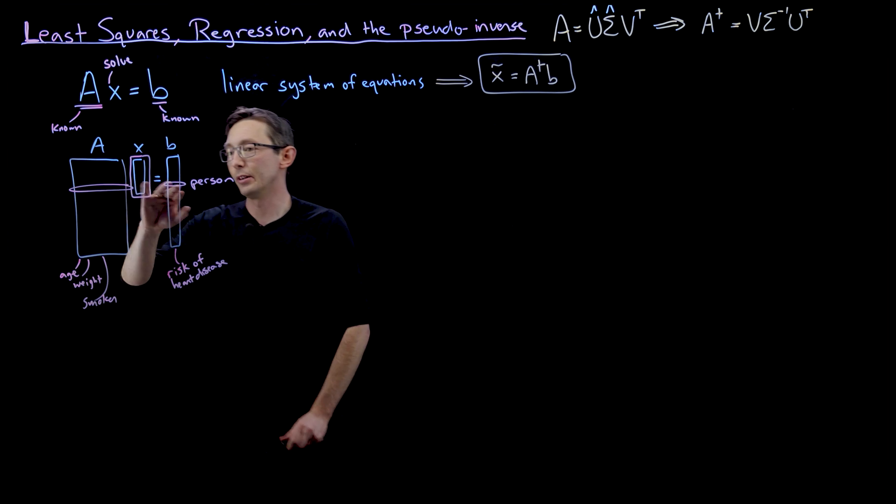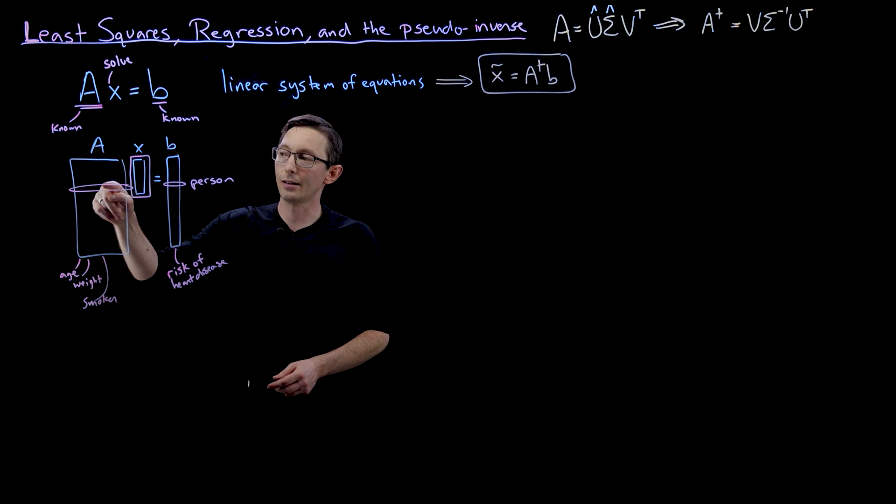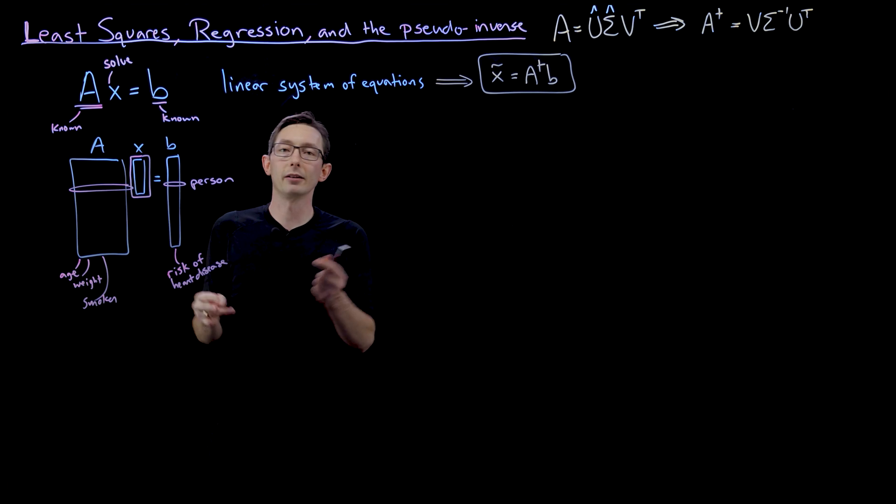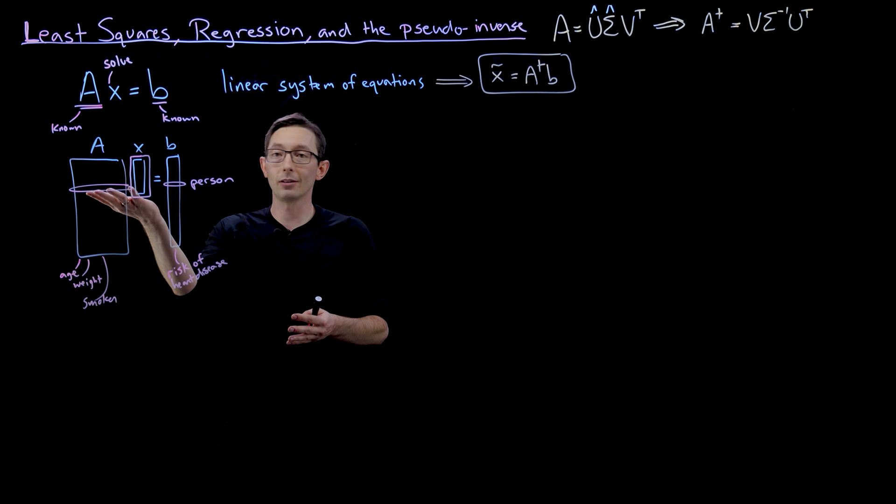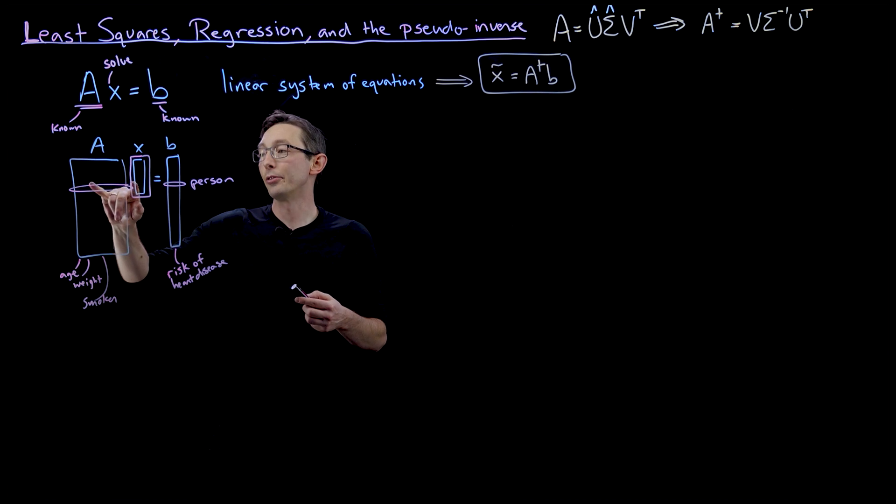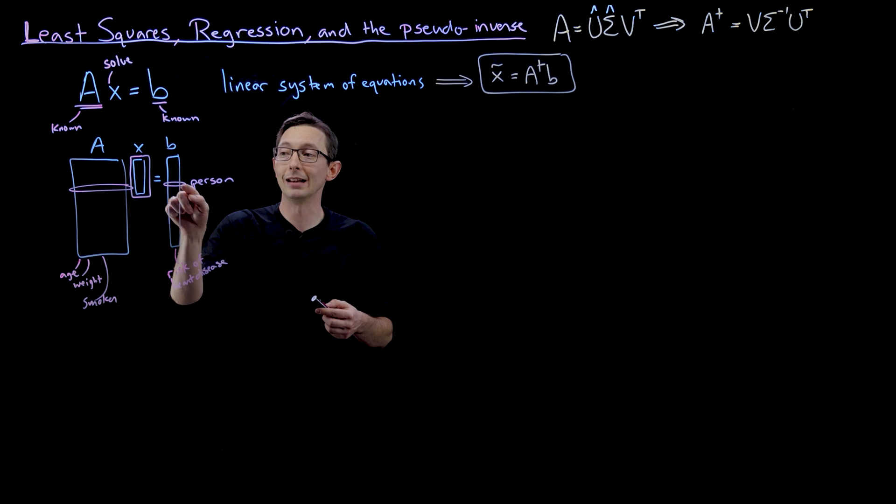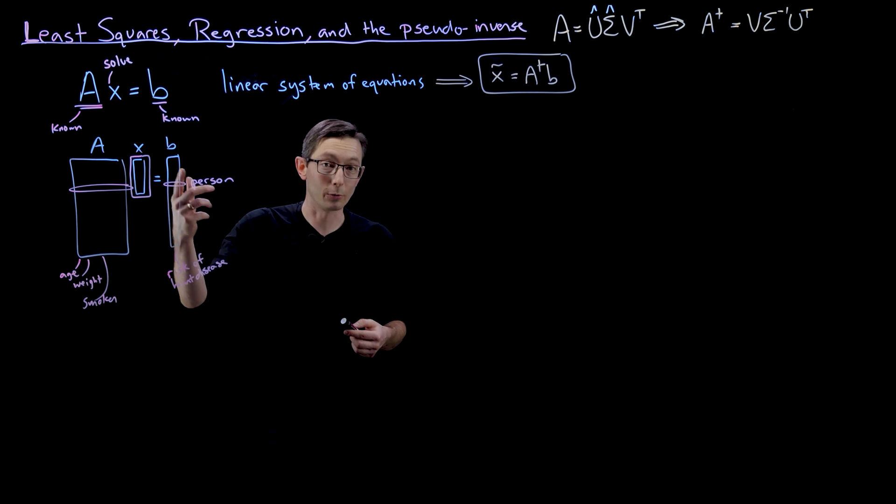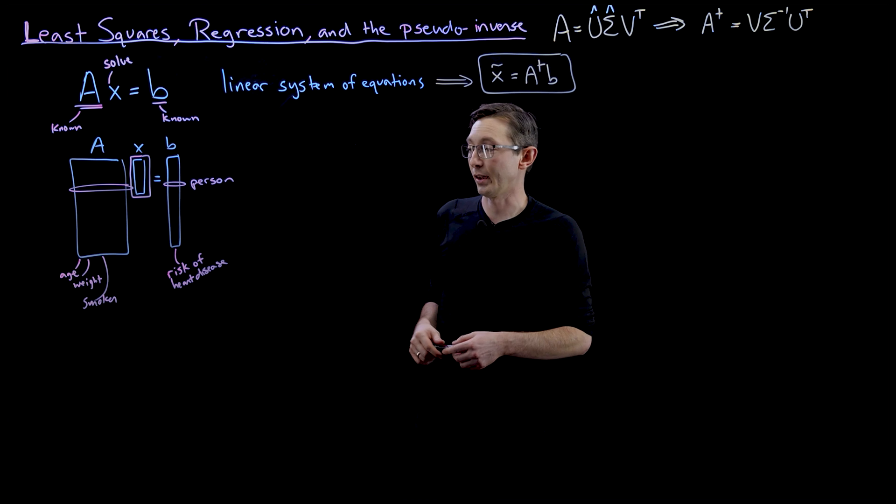So for example, in this case, you have your age, your weight, I'm not a smoker, et cetera. I multiply that vector by X, which is my model to some extent. It's my model for how those risk factors translate into a probability or a risk of heart disease.